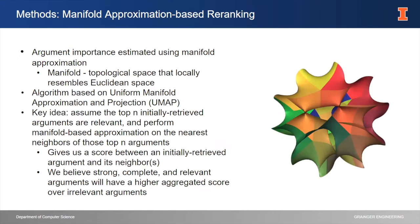Those are our three baseline runs. Now we'll talk about the manifold approximation, which is a pseudo-feedback approach using the idea of manifold approximation. A manifold is a topological space that locally resembles a Euclidean space. Our manifold calculation was based off of UMAP — Uniform Manifold Approximation and Projection — but just the first half of that equation. The key idea is we assume the top-N initially retrieved arguments from one of our baseline methods are relevant, then perform an approximation on the nearest neighbors of those top-N arguments. We aggregate scores across all those neighbors, and higher aggregated scores indicate stronger or more relevant arguments.